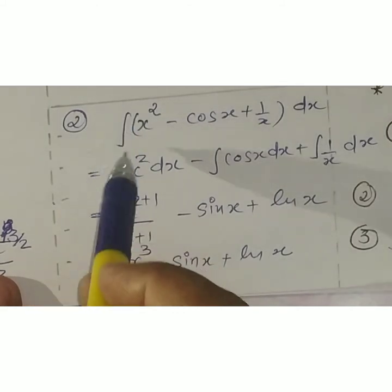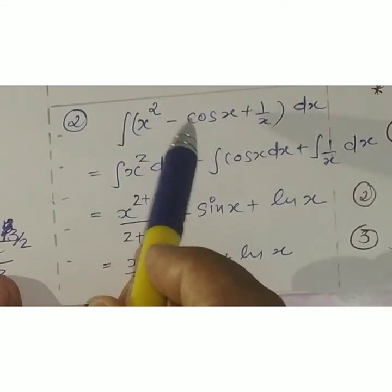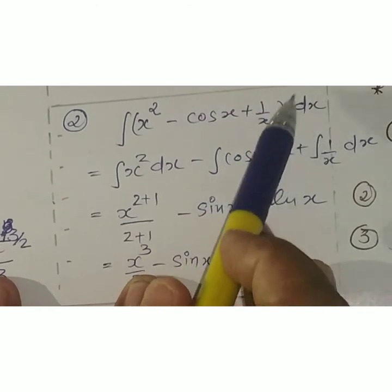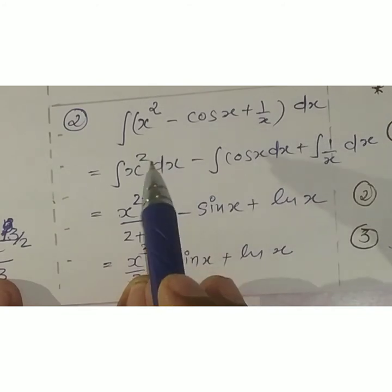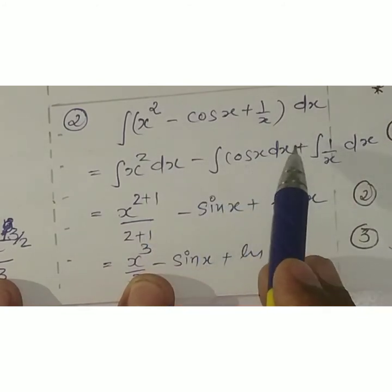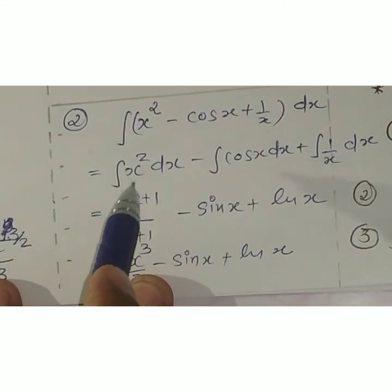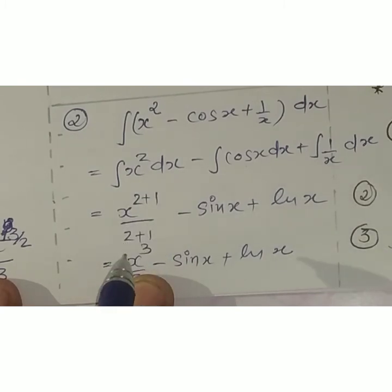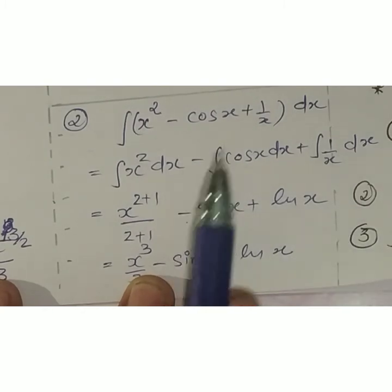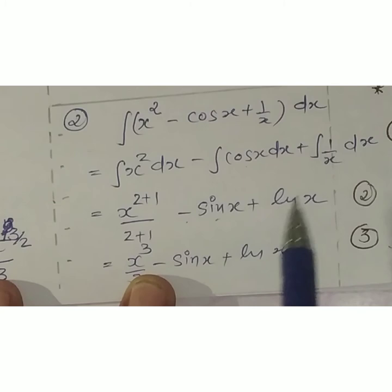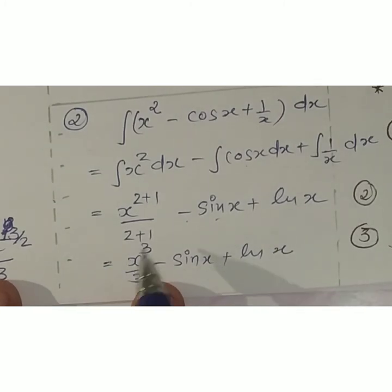Second question: integral of (x² − cos x + 1/x) dx. Apply the rule: integrate first term minus integrate second term plus integrate third term. For x²: power rule gives x raised to (2+1) upon (2+1) = x³/3. For cos x: integral of cos x is sin x. For 1/x: integral is ln x. So the final answer is x³/3 − sin x + ln x.